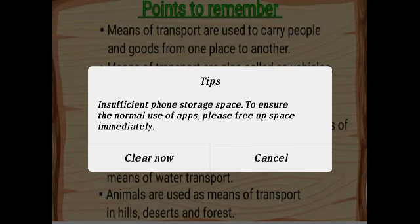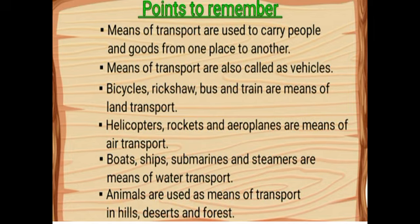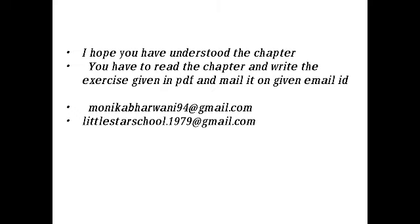Children, I hope everyone has now learned different ways of transport. Let's revise what we learned. Means of transport are used to carry people and goods from one place to another, and are also called vehicles. Bicycles, rickshaw, bus, and train are means of land transport. Helicopters, rockets, and aeroplanes are means of air transport. Boats, ships, submarines, and steamers are means of water transport. Animals are also used as means of transport in hills, deserts, and forests. I hope you have understood the chapter. You have to read and write the exercise given in the PDF and mail it to the given email ID.